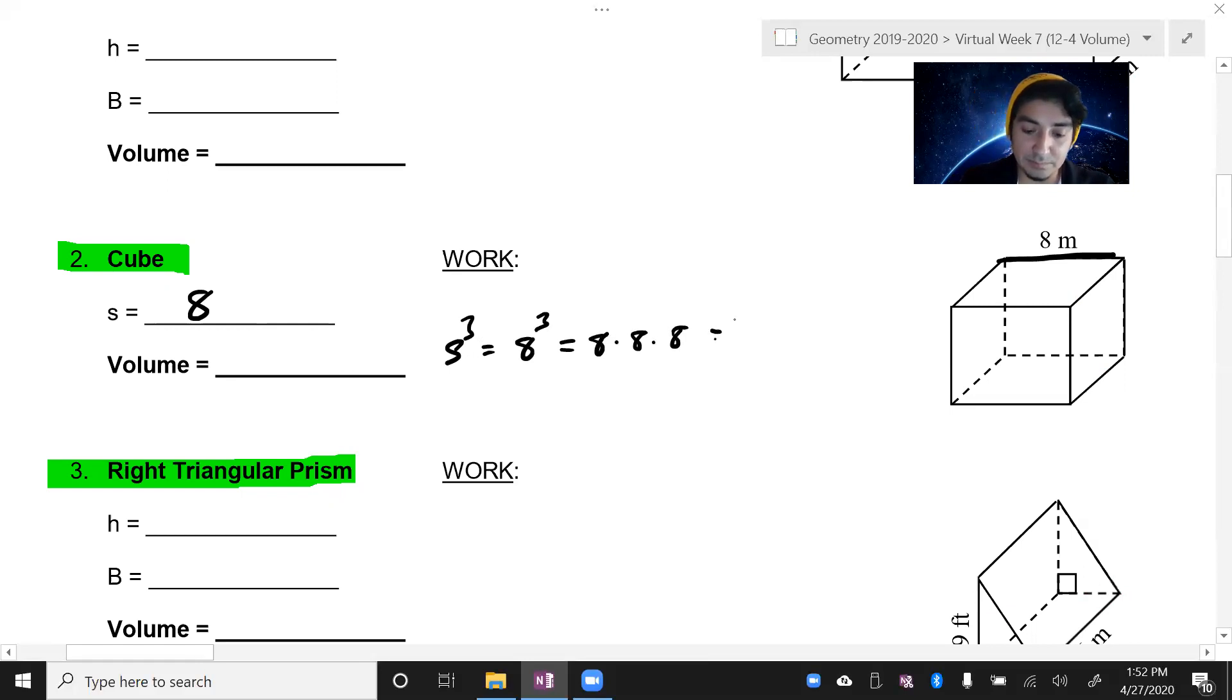Volume is going to be s cubed, so I'm going to put eight cubed, which is eight times eight times eight. When you plug it in, eight times eight times eight is 512. So 512 meters cubed, because it's eight meters times eight meters, that gives you meters squared, and then times another meters which is the height, and that'll be meters cubed.